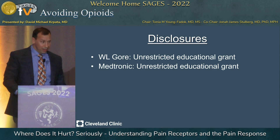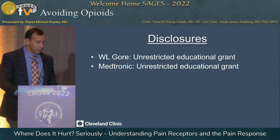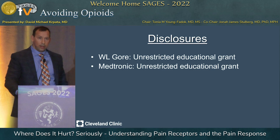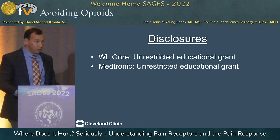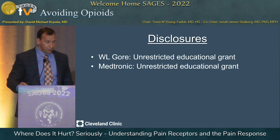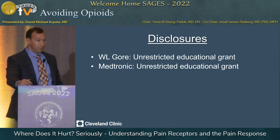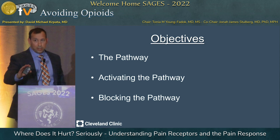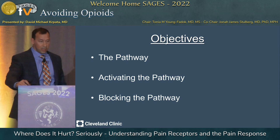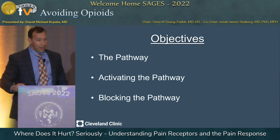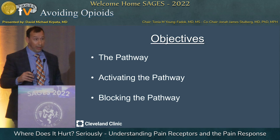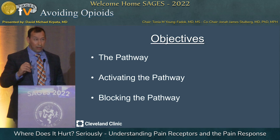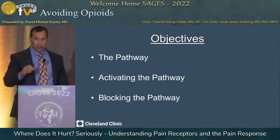They are not relevant to this talk. I'll disclose that I'm going to do my best impression of my neurobiology teacher from University of Arizona, Dr. Nolte. So here we go. I have three objectives with this talk: the first is to go over the pain pathway — I just call it 'the pathway' — and we're going to talk about activating the pathway and then blocking the pathway. I always learned that if you want somebody to learn something, you need to tell them three times, so we're going to go through this three times.